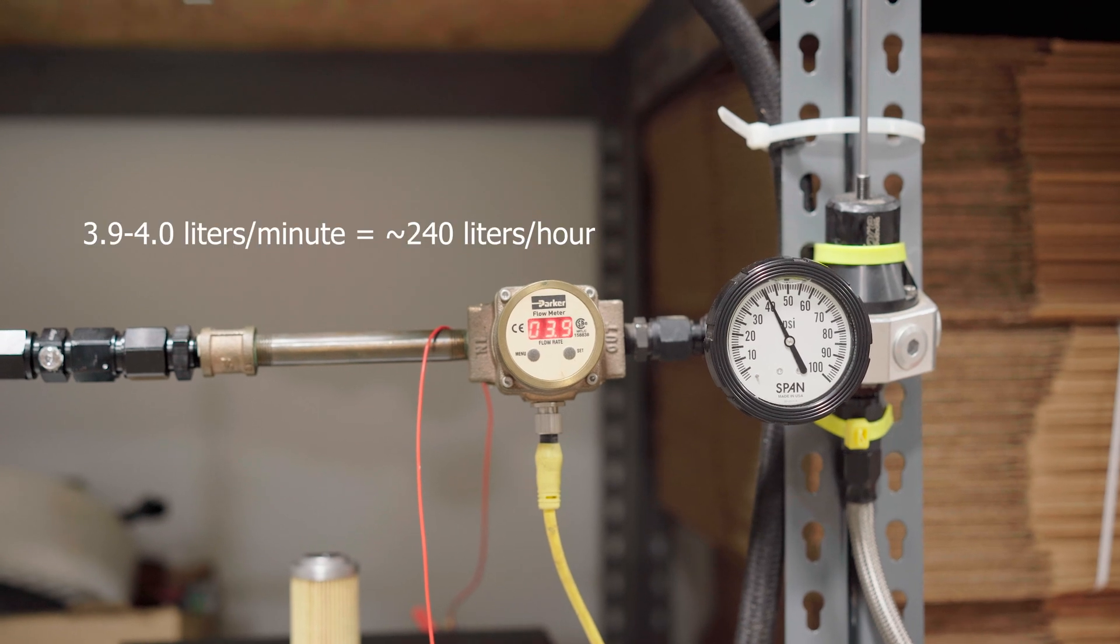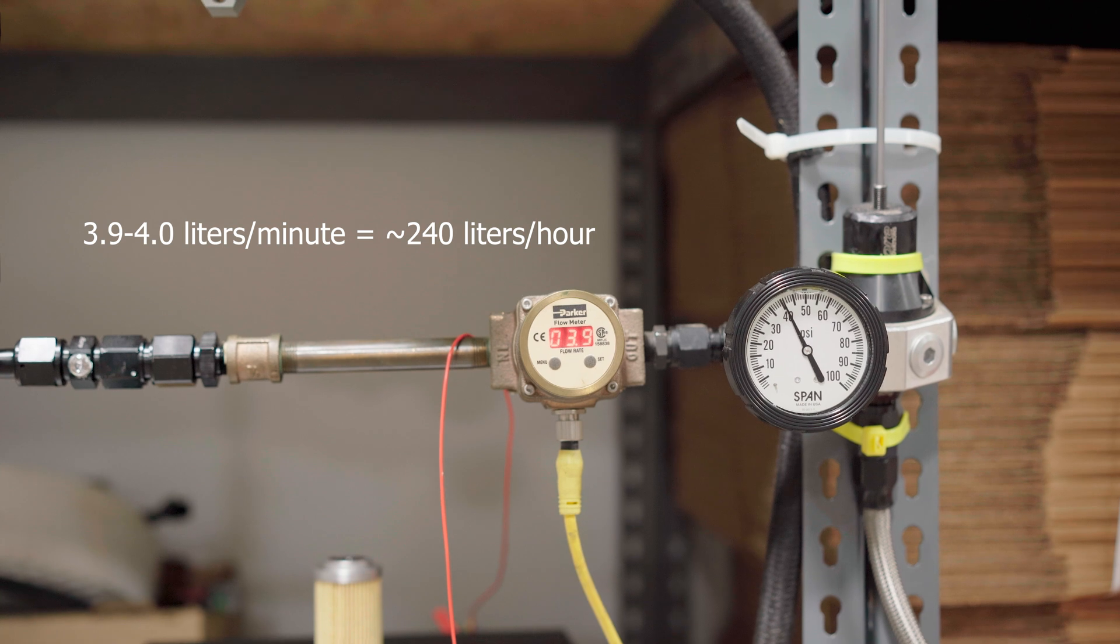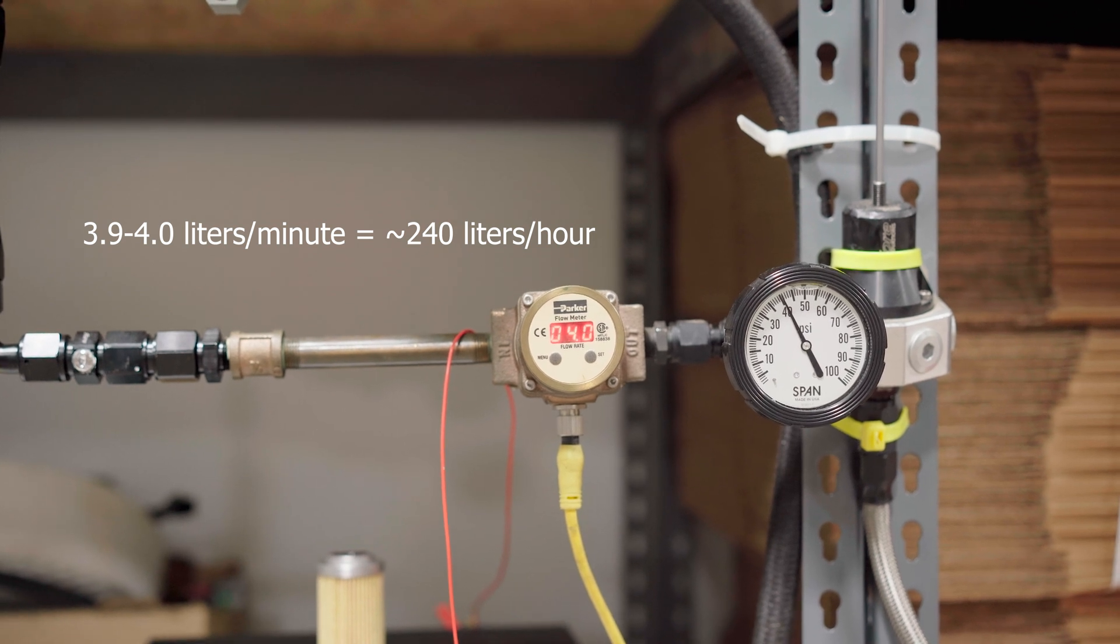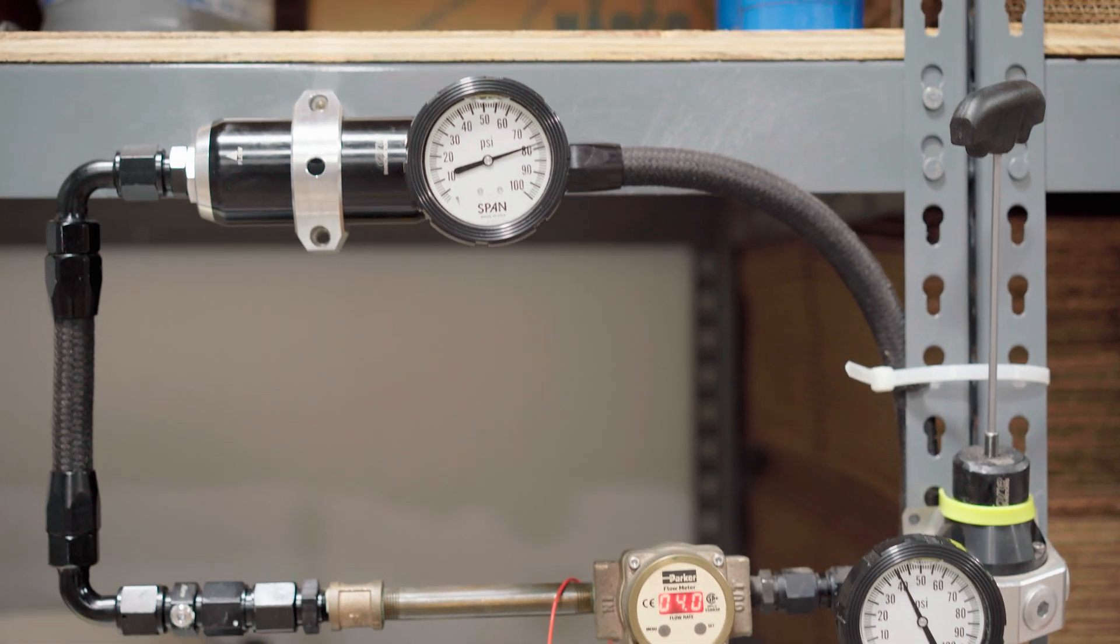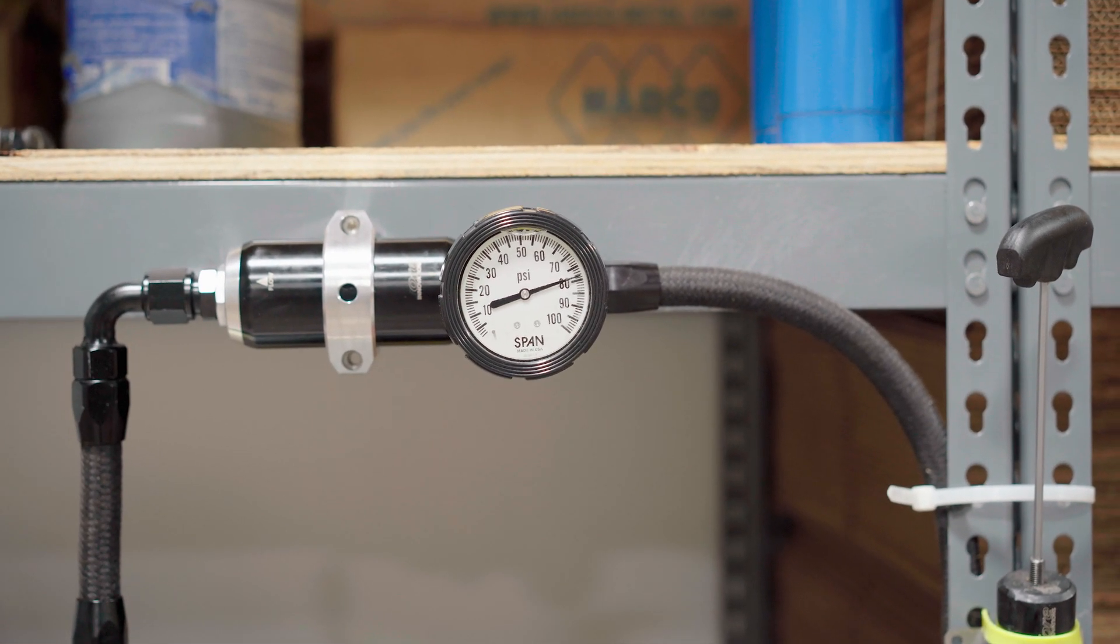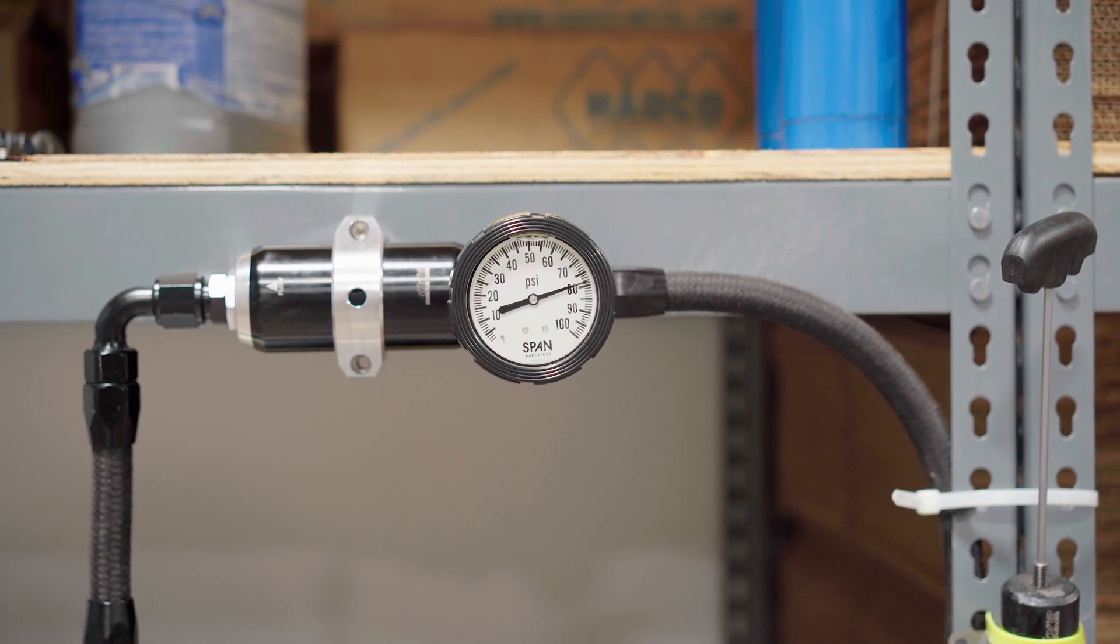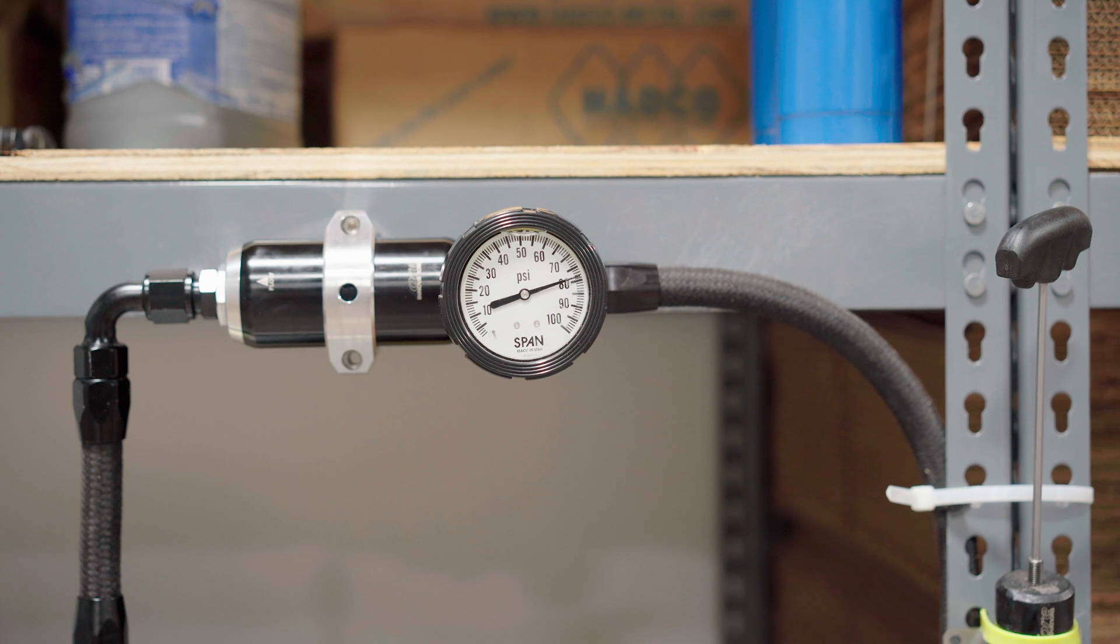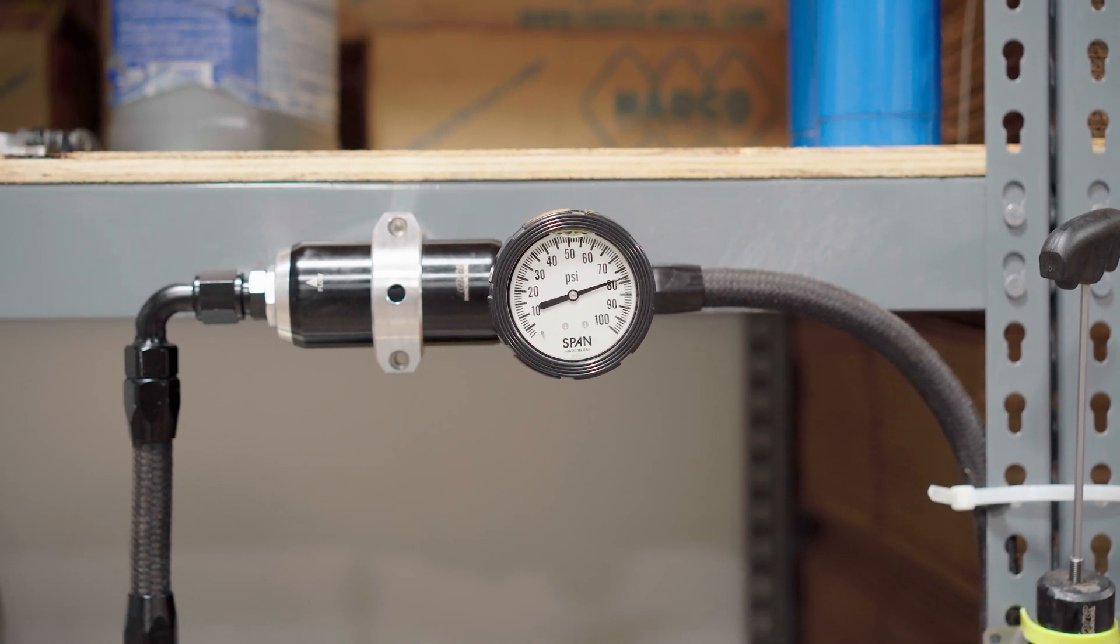If you follow the routing up, you've got a filter and then another gauge before the filter. In this case, the fuel pressure is reading almost 80 psi. The reason it's so much higher here is because of the obstruction in the filter.